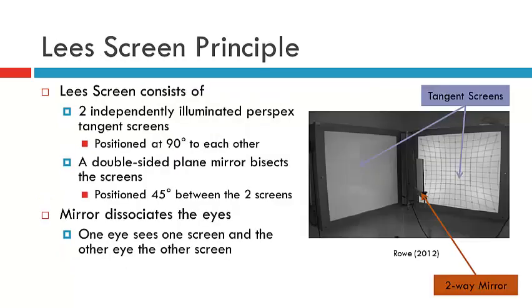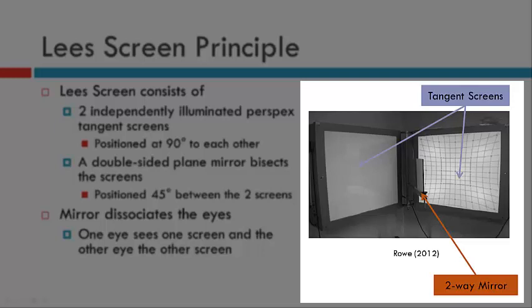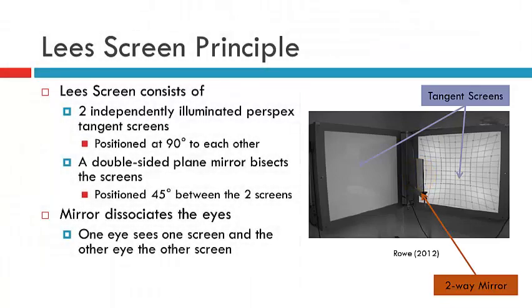The Lee Screen consists of two independently illuminated perspex tangent screens. We can see here in the image on the right that this is the tangent screen that's not illuminated and at 90 degrees here is the illuminated tangent screen. We also have a mirror that bisects the screen at 45 degrees. The mirror in dissociating the eyes will effectively result in one eye seeing one screen and the other eye seeing the other screen.